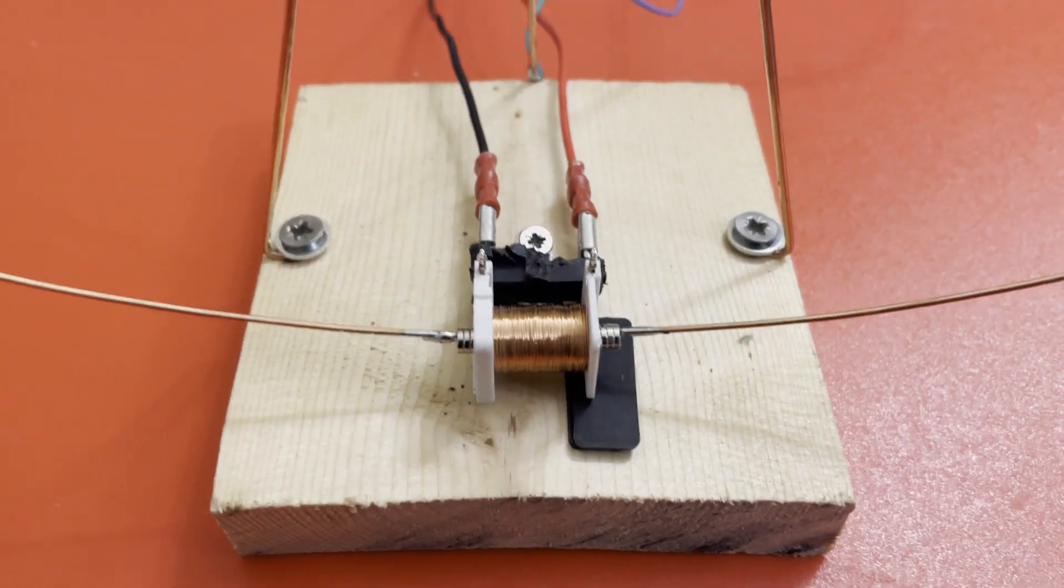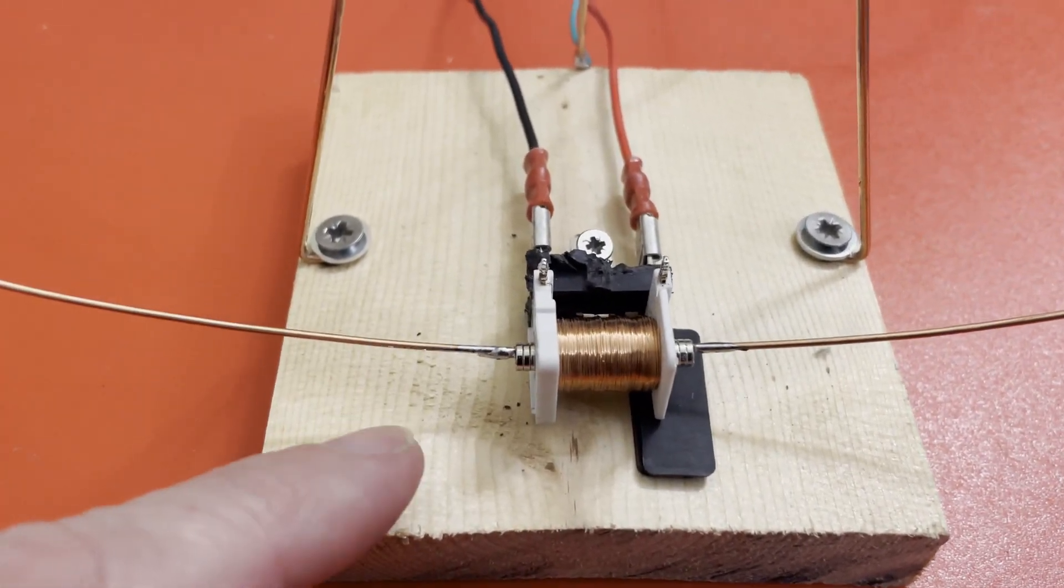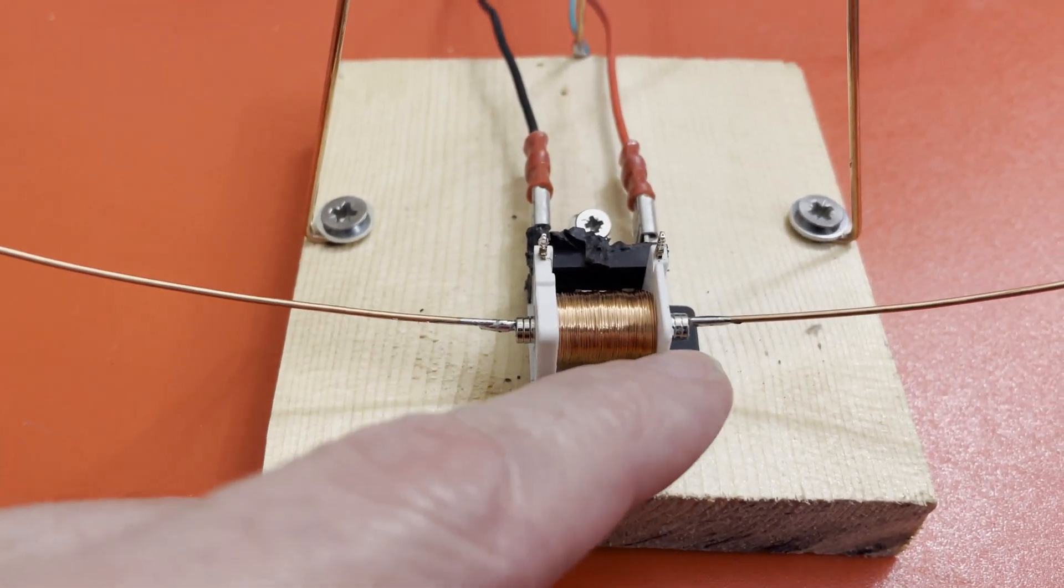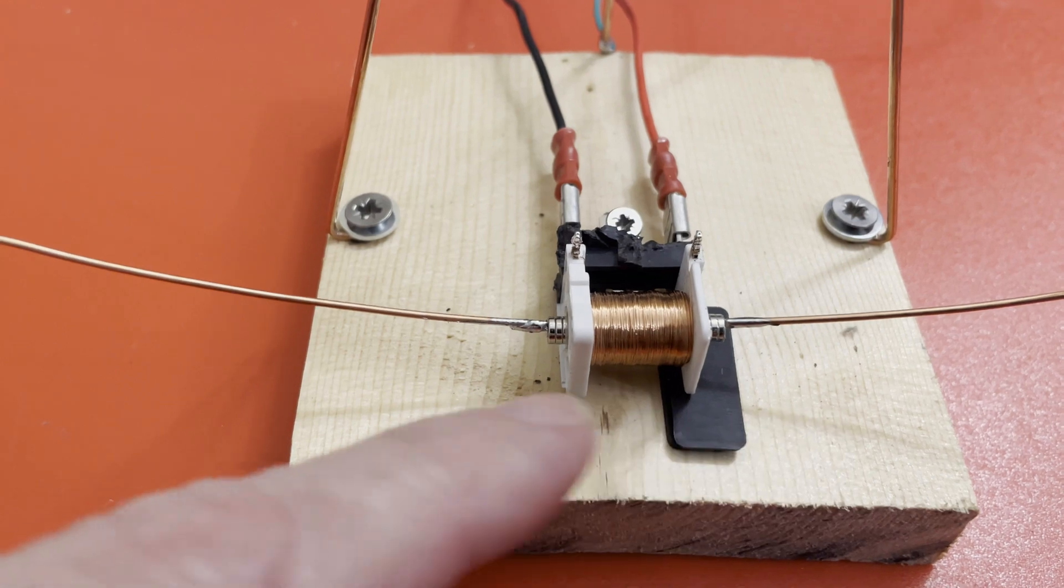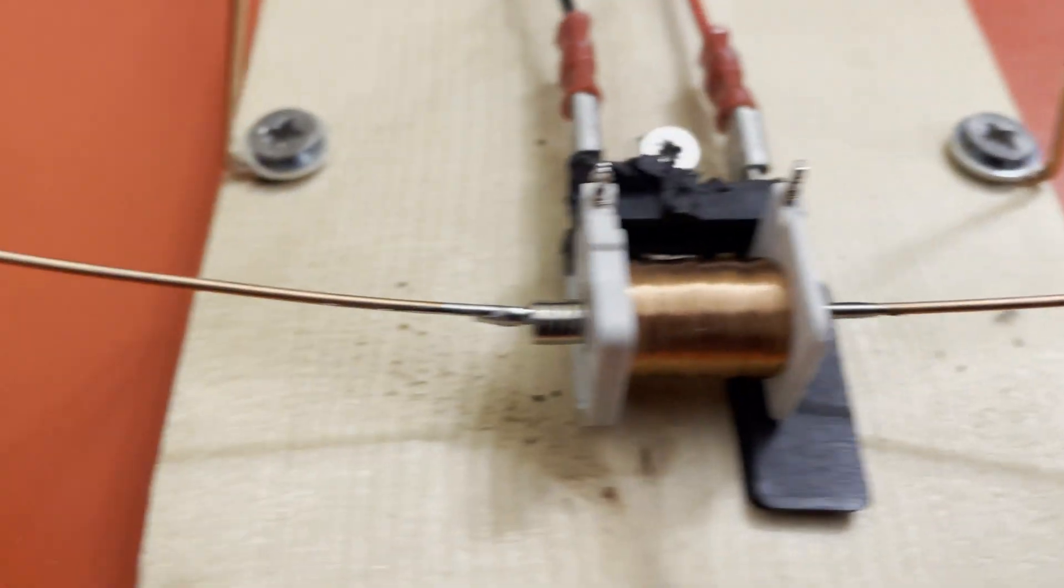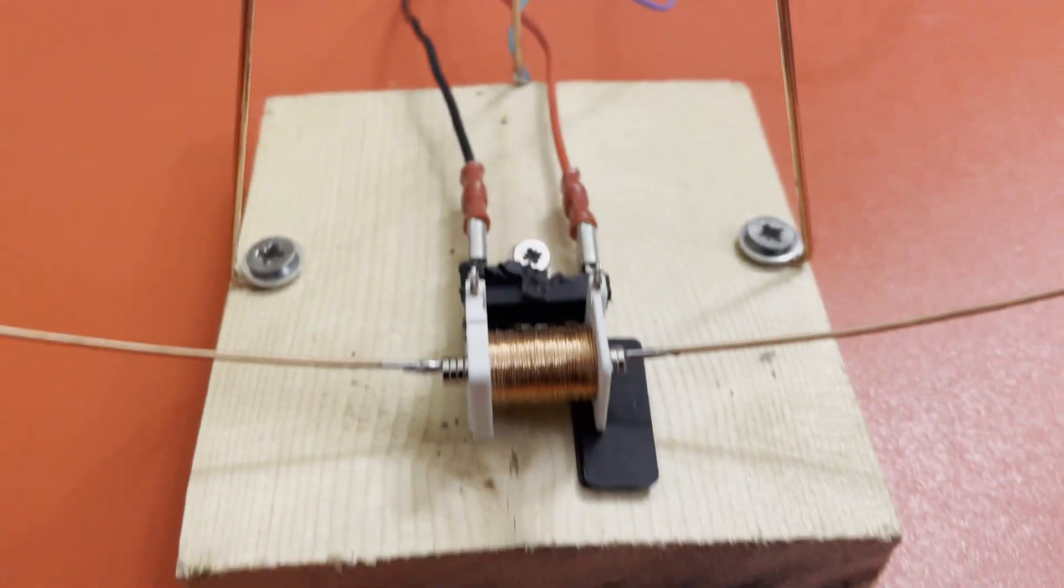So the curved bit at the bottom there is made from a bit of stiff copper wire. Now that turned out to be too thick to go through the magnets which would have made it a lot easier. So it's got a bit of twisted wire that's been tin soldered through the magnets and then that soldered on at each end to the thicker wire that forms the arc.